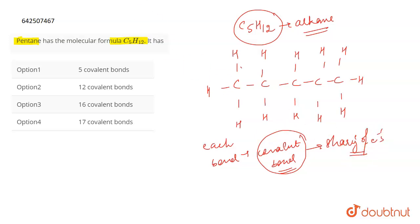So if you count the number of bonds, how many will you get? 1, 2, 3, 4, 5, 6, 7, 8, 9, 10, 11, 12, 13, 14, 15, and 16.